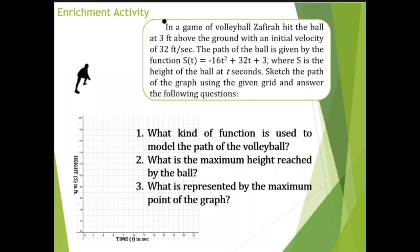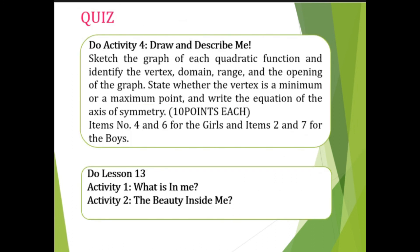For your quiz, do Activity 4 'Draw and Describe Me.' Sketch the graph of the quadratic functions and identify the vertex, domain, range, and opening. State whether the vertex is a minimum or maximum point and write the equation of the axis of symmetry — 10 points for every correct answer. Girls answer items 4 and 6 only; boys answer items 2 and 7 only. Also do Lesson 13 Activity 1 'What Is in Me' and Activity 2 'The Beauty Inside Me' on your activity sheets.